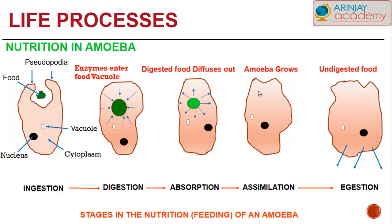Let's look at how nutrition takes place in a single-celled organism like an amoeba. Looking at the diagram, the amoeba has a body that comprises pseudopodia — often referred to as finger-like projections or false appendages. It has a nucleus, which helps it think like our brain, a cytoplasm that surrounds the internal structure, and a vacuole which is an empty space.